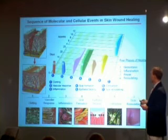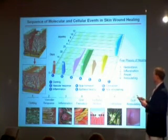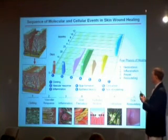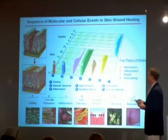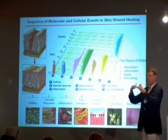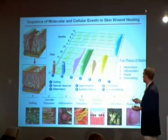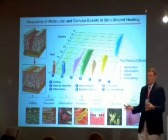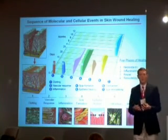Finally, when this provisional matrix is mature enough and collagen has been laid down, the epithelial cells will begin to migrate to resurface the wound and close it. That growth will be supported by adequate angiogenesis.